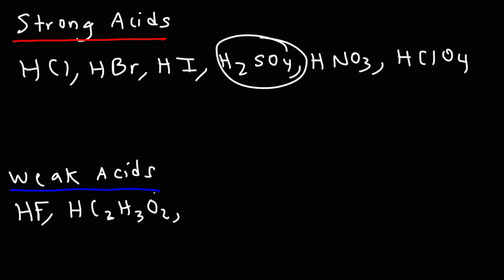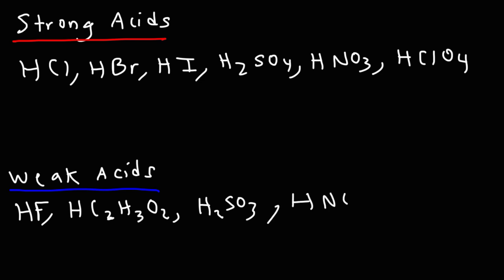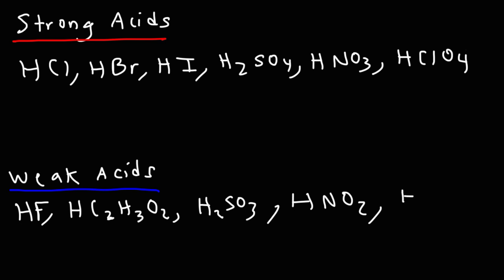Sulfuric acid has four oxygen atoms, and sulfurous acid has three oxygen atoms. When dealing with oxyacids, the fewer oxygens there are, the less acidic it will be. So nitric acid is a strong acid, but nitrous acid (HNO2) is a weak acid. Perchloric acid is a strong acid, but chloric acid (HClO3) is a weak acid. HClO2 and HClO are also weak acids.